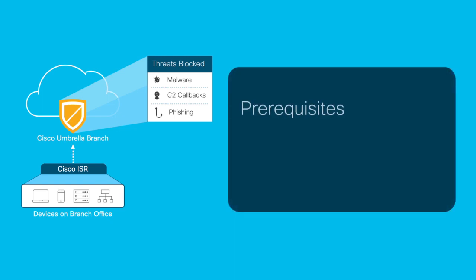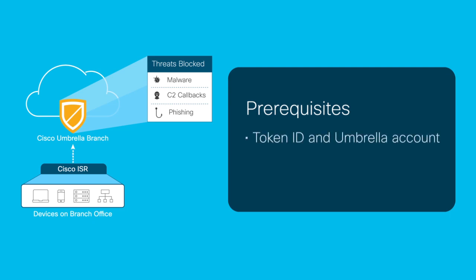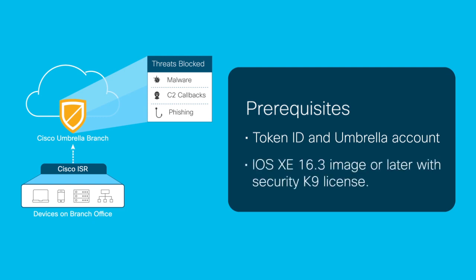Before you deploy Umbrella Branch, you should have a Token ID and an Umbrella account to log into the portal. Also, ensure that the device has iOS XE 16.3 image or later with Security K9 license.